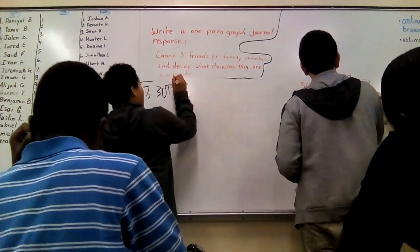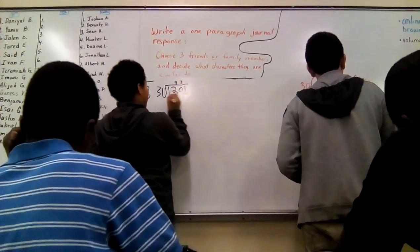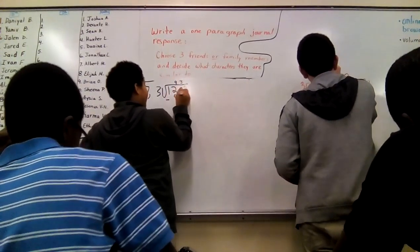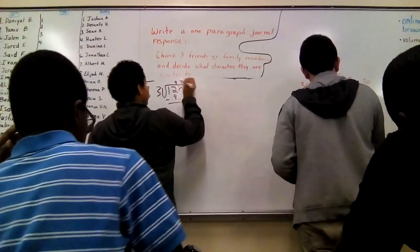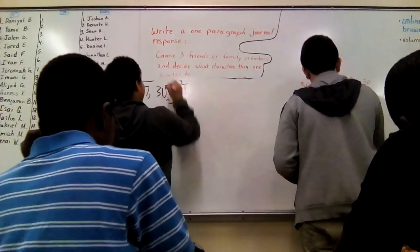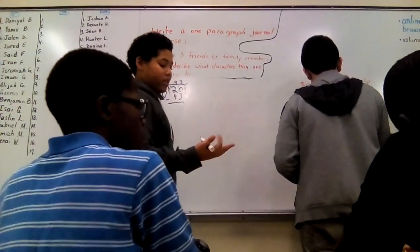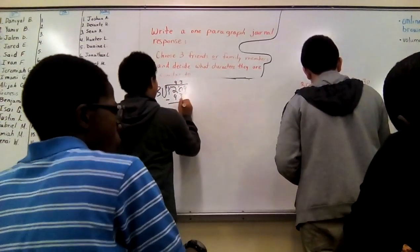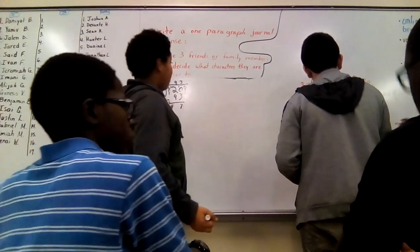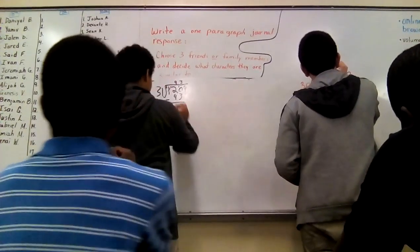So we can do thirty-one times five is one fifty-five. That's too high. So let's try lower. So now let's do thirty-one times three. Ninety-three is closest.